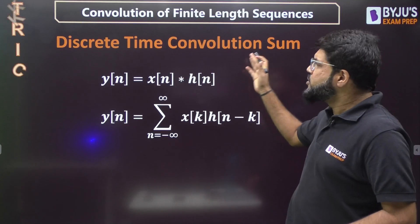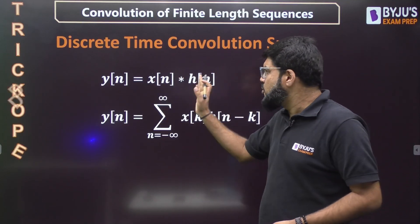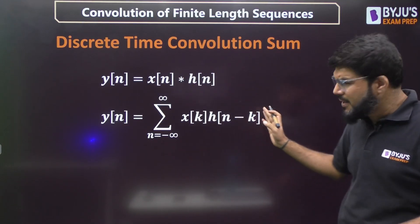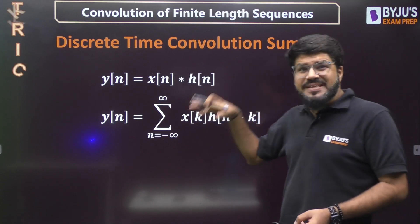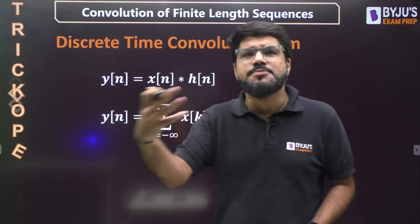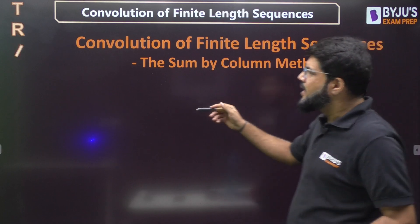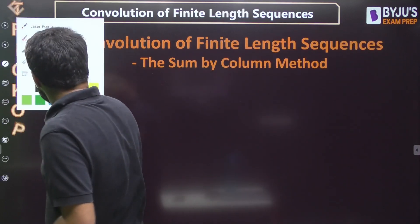Normally, convolution sum in discrete time we define it as x[n] convolution h[n], which is summation x[k] h[n-k]. If you apply this especially on finite length signals, the process becomes lengthy. How to simplify it? Let's learn it by a method named the sum by column method.